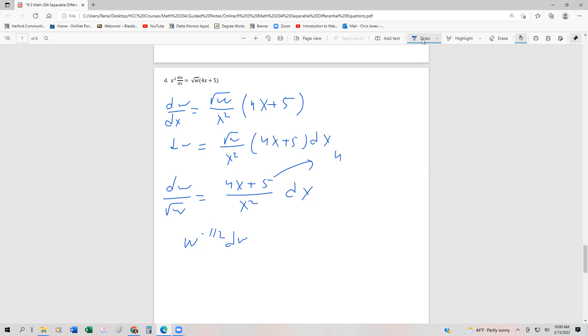So this is going to be 4x over x² plus 5 over x². Or in other words, we can write that as 4 over x plus 5x to the minus 2, quantity dx. Just by simplifying the algebra, and now we can integrate term by term.